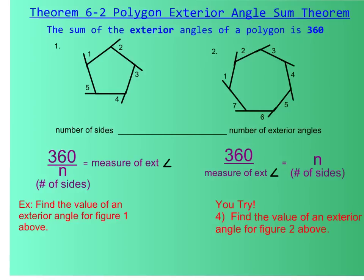Here we have another theorem called the Polygon Exterior Angle Sum Theorem. Before we were talking about interior angles — any of the angles inside your polygon, because interior means inside. Now we're talking about exterior angles. An exterior angle is created by extending one of your sides, which we've also discussed with the triangle exterior angle theorem. The key fact is that the sum of all exterior angles of a polygon is 360 degrees.